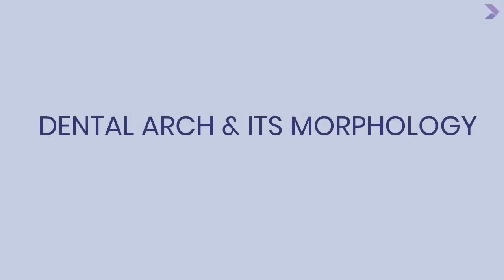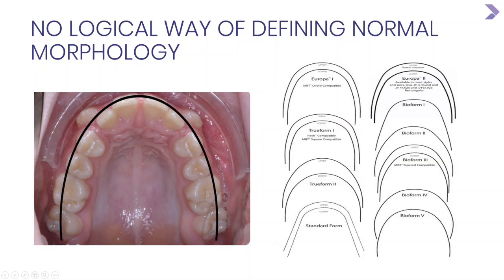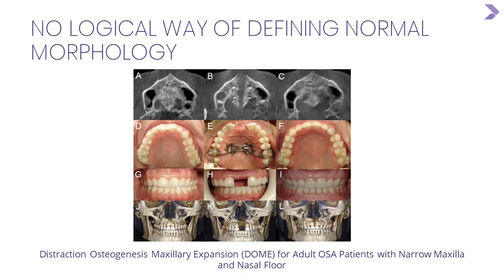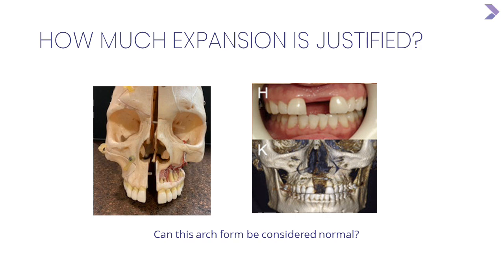The dental arch and its morphology — meaning shape and size — describe how teeth are organized to function. When the patient comes in, we define that as their normal, yet we have so many normal variations. Techniques keep expanding arches but then close them back. The big question is: how much expansion is justified? And without really looking at morphology within an arch, would you ever consider a severely split arch to be normal?